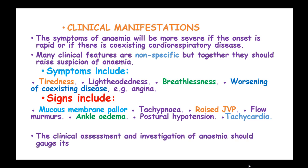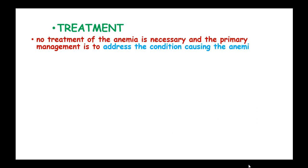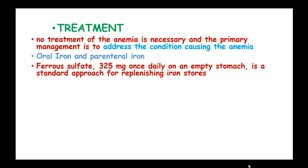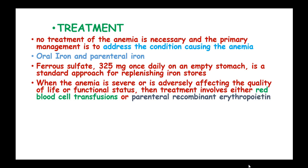The clinical assessment and investigation of anemia should gauge its severity and divine the underlying cause. There is no single treatment of anemia; the primary management is to address the condition which has caused the anemia. Oral iron and parenteral iron can be used — ferrous sulfate once daily on an empty stomach is the standard approach to replenish iron stores in iron-deficient anemias. When the anemia is severe or adversely affecting quality of life or functional status, treatment involves either red blood cell transfusion or parenteral recombinant erythropoietin therapy.